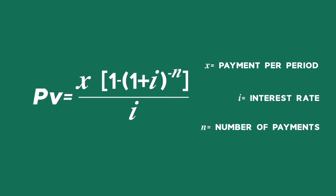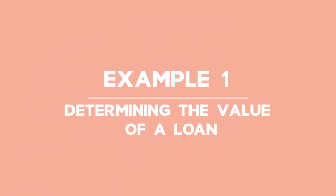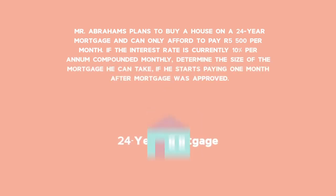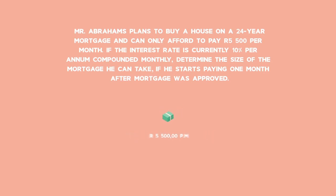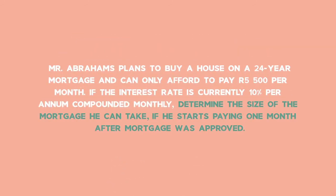Let's look at some present value examples. Example 1: Determining the value of a loan. Mr. Abrahams plans to buy a house on a 24-year mortgage and can only afford to pay R5,500 per month. If the interest rate is currently 10% per annum compounded monthly, determine the size of the mortgage he can take if he starts paying one month after the mortgage was approved.